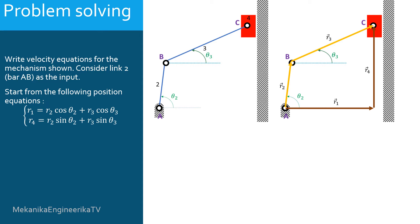Links 2 and 3 are rotating, thus their angles theta 2 and theta 3 are variables. Also, R4 increases if the slider goes upwards and decreases if the slider goes downwards. We are going to assume that the position problem is already solved, so all position parameters are known.